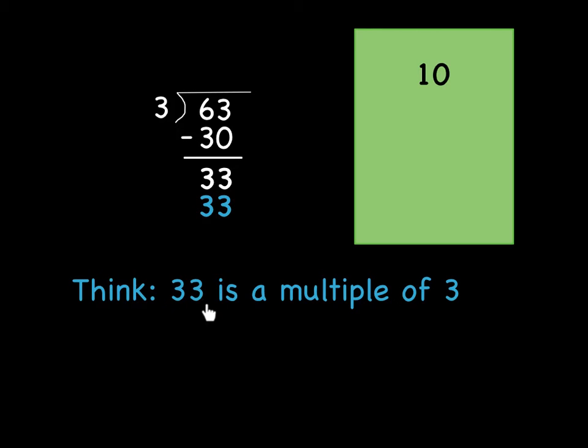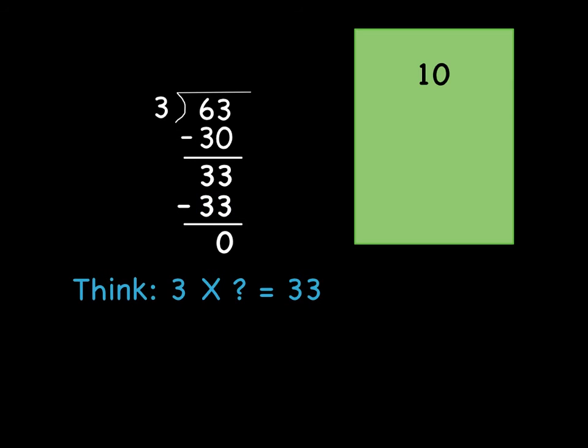In that case, we might recognize that 33 is a multiple of 3, which is quite convenient for this problem. Because now we're just going to think, well, 3 times what number is 33? And that's 11. 3 times 11 is 33, which we're going to write over here in the answer box.